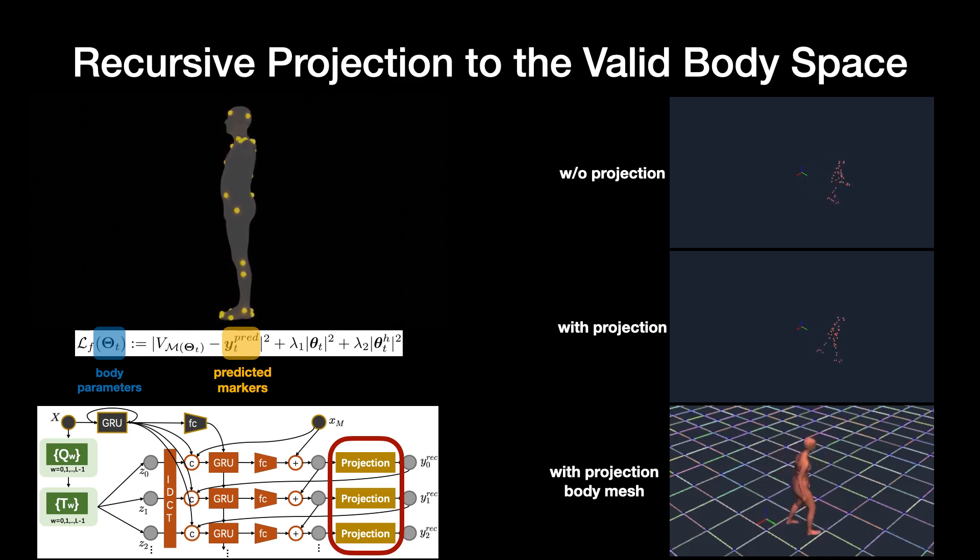At each time instance, we fit the SMPL body model to the predicted markers. Then, the 41 markers on the SMPL body mesh are taken as the next prediction for the next time step. This projects the solution back onto the manifold of valid body shapes and poses, preventing drift. Besides preserving the body validity during motion, such a projection scheme directly yields body parameters and body meshes that can be used directly in animation.